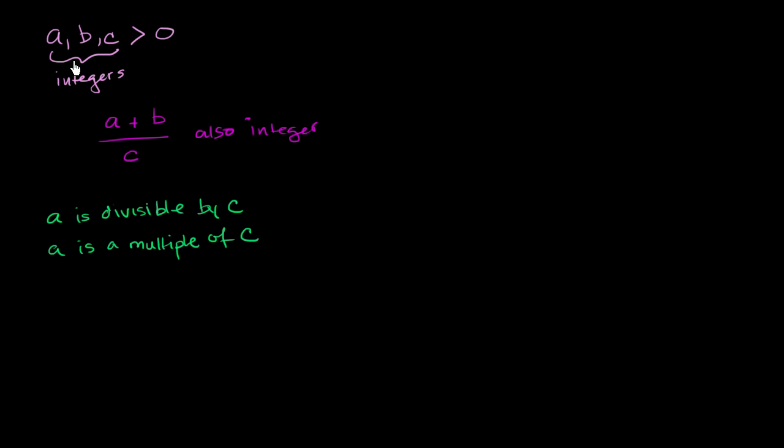So this is what we know. a, b, and c are integers, all greater than 0. We know that the expression a plus b over c is also an integer, and that a is a multiple of c. Or in other words, that c divides perfectly into a.